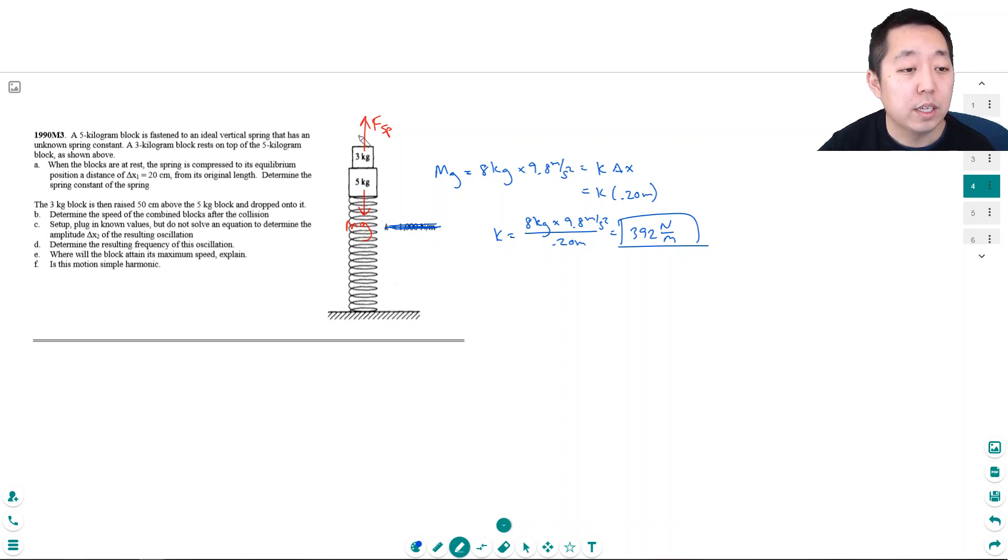Okay, so a three kilogram block is raised 50 centimeters above the five kilogram block and dropped onto it. Determine the combined blocks after the collision. This is a good hint because what happens is once they stick together, this is an inelastic collision, so I don't want to use energy to relate what happens before and after the collision.